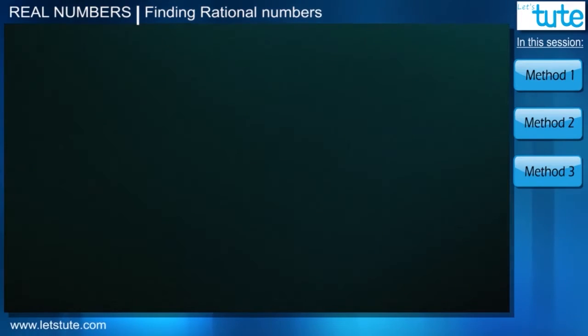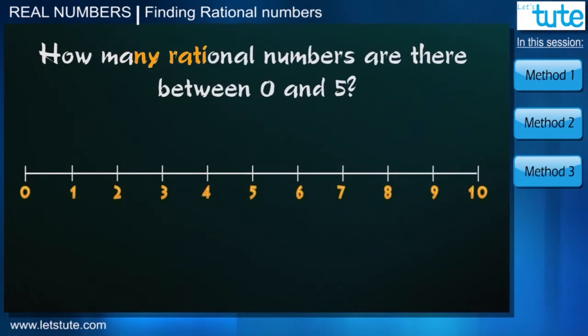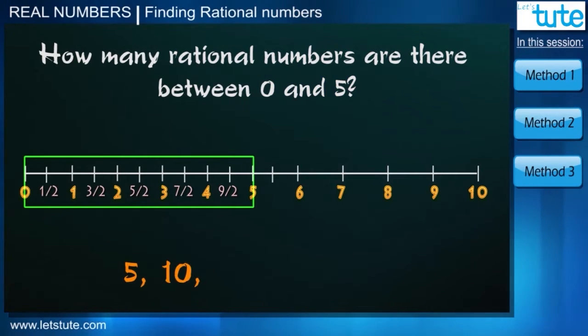So before we start with anything, tell me how many rational numbers are there between 0 and 5? 5? 10? 100? There are actually many numbers.